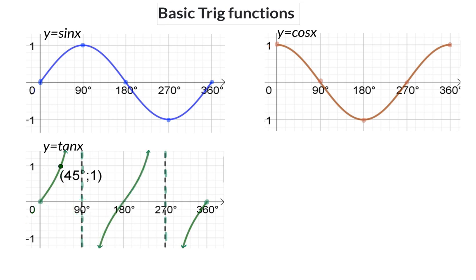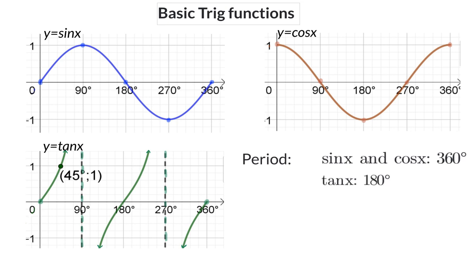You are also taught two new definitions: the period and the amplitude of the graph. The period is the number of degrees it takes for one full wavelength or one full curve to complete. For the sin as well as the cos graph, this will be 360 degrees — after 360 degrees, the same curve starts repeating. The tan graph has a period of 180 degrees; in between two asymptotes, one wavelength is completed.